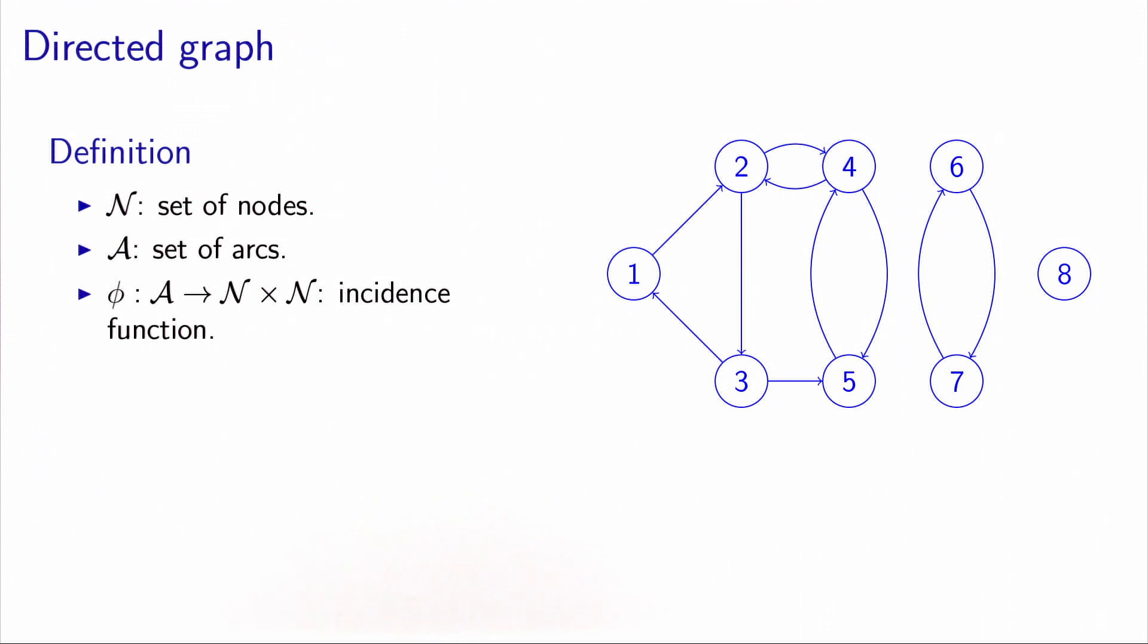The vocabulary will change. The vertices will be called nodes, and the edges will be called arcs, to emphasize that they have a direction. Now the incidence function maps the set of arcs into the set of ordered nodes. So now the order matters.